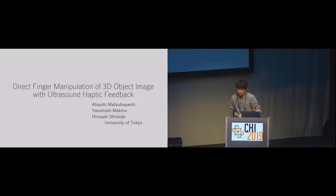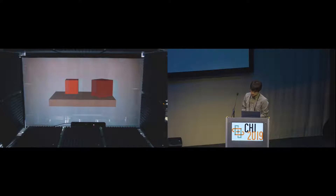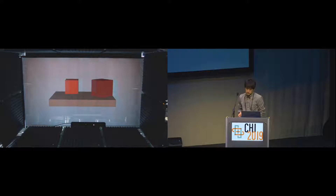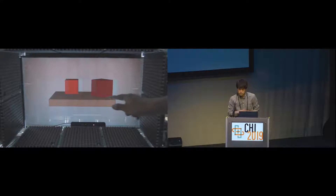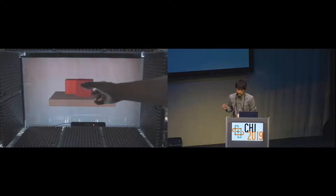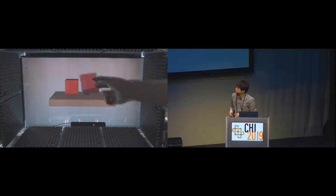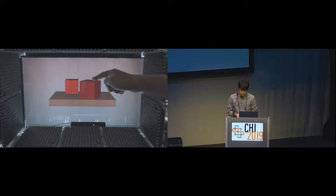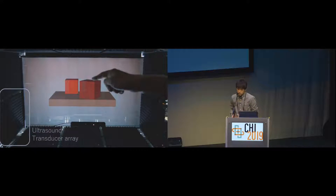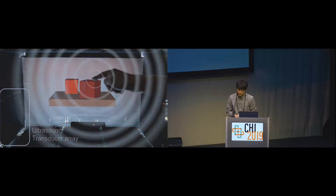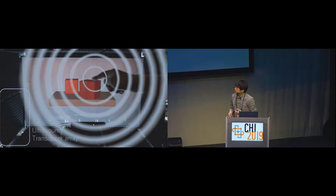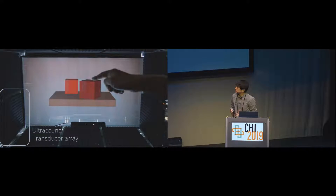Thank you. Today I'm going to talk about a new interactive system that enables mid-air haptic 3D manipulation. First I would like to show an example of 3D object manipulation that our prototype system realizes. An autostereoscopic display shows a 3D object image in the air and the user can touch, grab, or move it freely. In our system there are many small ultrasound transducers around the workspace, so when the user touches the object, haptic feedback is presented to the finger.